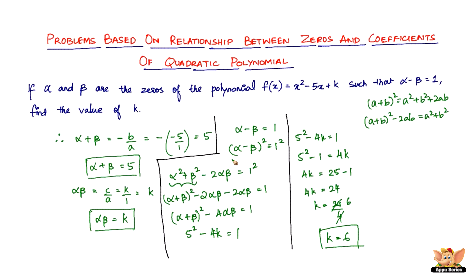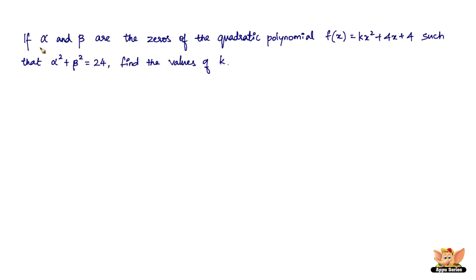So 5² - 1 = 4k, meaning 4k = 24, and therefore k = 6. That is the answer to this problem — it's all about applying the relationship between zeros and coefficients of the quadratic polynomial and converting alpha - beta = 1 into a form we can use. Now let us solve another problem: if alpha and beta are the zeros of f(x) = kx² + 4x + 4 such that alpha² + beta² = 24, find the values of k.